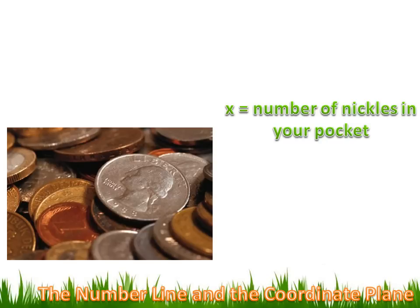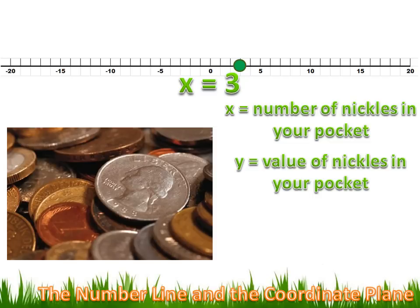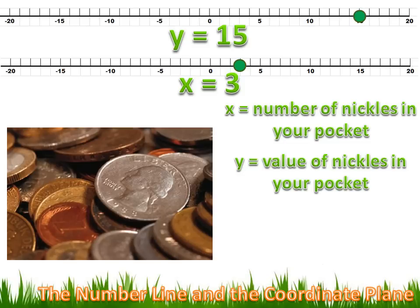Let's say that x equals the number of nickels in my pocket. I've got three nickels, so x equals three. We could plot that on a number line — go to the positive three and put a dot right there. We'd see we were three units from the origin. We could also plot a value y, which is the value of the nickels in my pocket. I've got three nickels and each is worth five cents, so three times five is 15 — my y value is 15. I could plot that on a number line, putting a little green dot out there at 15. So I've got two number lines that graphically demonstrate where 3 is and where 15 is.